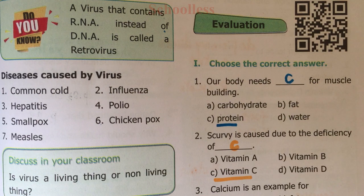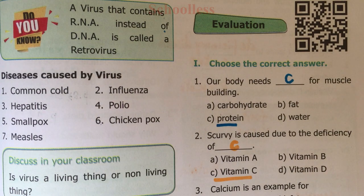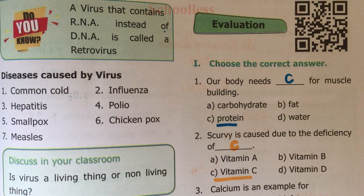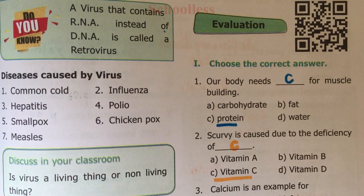So C — Protein — is the right answer. Question Two: Scurvy is caused due to deficiency of which vitamin? A) Vitamin A, B) Vitamin B, C) Vitamin C, D) Vitamin D. Vitamin C deficiency causes Scurvy. So the answer is C.